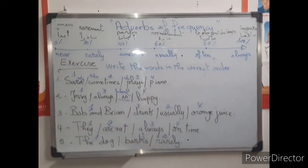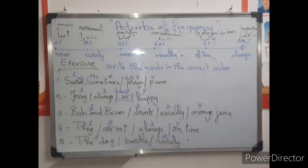I hope that the adverbs of frequency are clear — they are easy. You just have to pay attention to the verb: whether it's verb to be or not. If it's verb to be, verb to be comes first, then the adverb of frequency. If it's not, use the adverb of frequency first, then the verb. I hope you understood the lesson. Thank you for your attention — see you next time in another video.